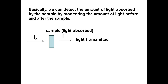We can detect the amount of light absorbed by a sample by monitoring the amount of light before and after the sample. We measure the intensity of the light before the sample, then we measure the intensity of the light after, and then we know that sample would have absorbed the difference in that light.